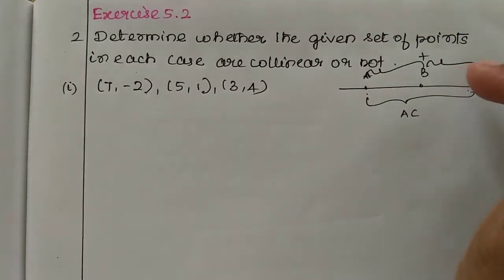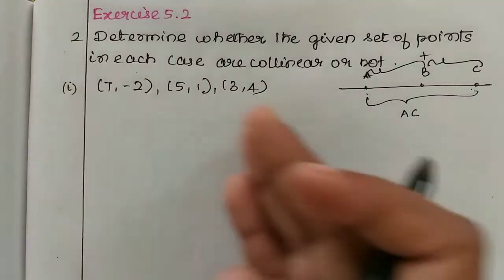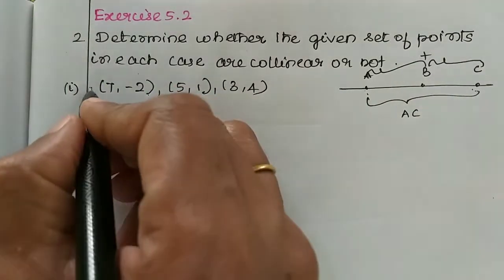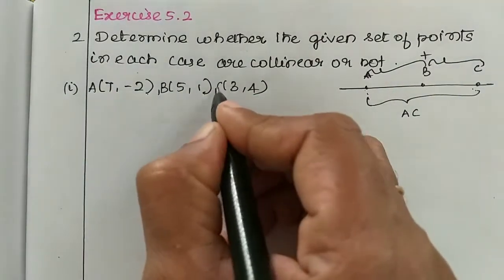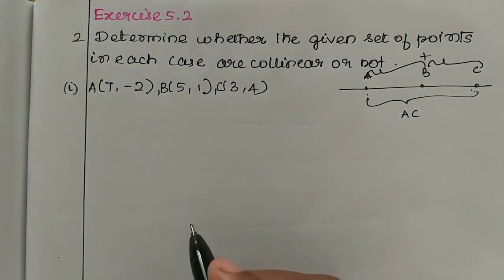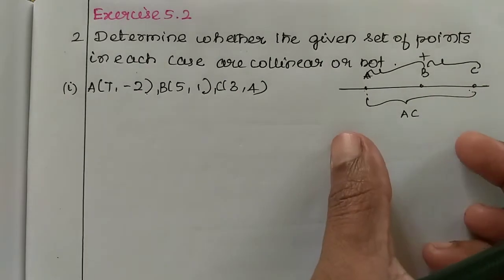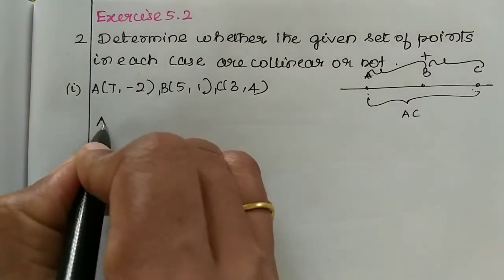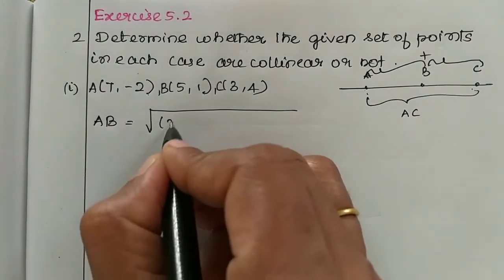Let's check that both sides are equal, so these points are collinear. First point A, second point B, and third point C. We need the lengths AB, BC, and AC. So first, we calculate AB, BC, and AC using the distance formula.